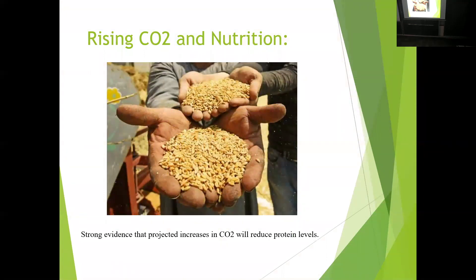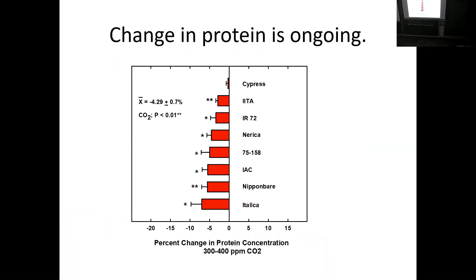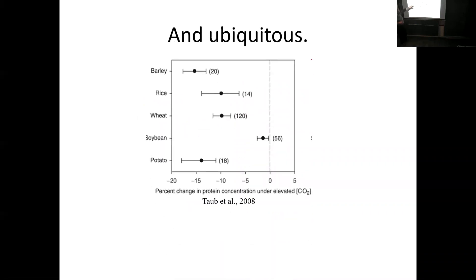I want to focus on just one aspect of the OMG part, and that's nutrition. There's strong evidence that projected increases in CO2 will reduce protein levels, particularly in many of the basic cereals that feed the world — particularly wheat and rice. This is some work I did just before I left USDA. This is with polished rice, looking at the percent change in protein concentration between 300 and 400 parts per million — the change that's already occurred in CO2. It's about a 5% change, and seven of the eight lines showed a significant decline. It's also ubiquitous. This is work by Daniel Taub back in 2008 showing the number of studies for barley — this is the change in protein concentration for rice, wheat, soybean, and so forth. Worth pointing out that for soybean, we did not see a large decline in protein, in part because it's a legume that fixes nitrogen. Peanut and soybean did not show this change in protein decline with more CO2.